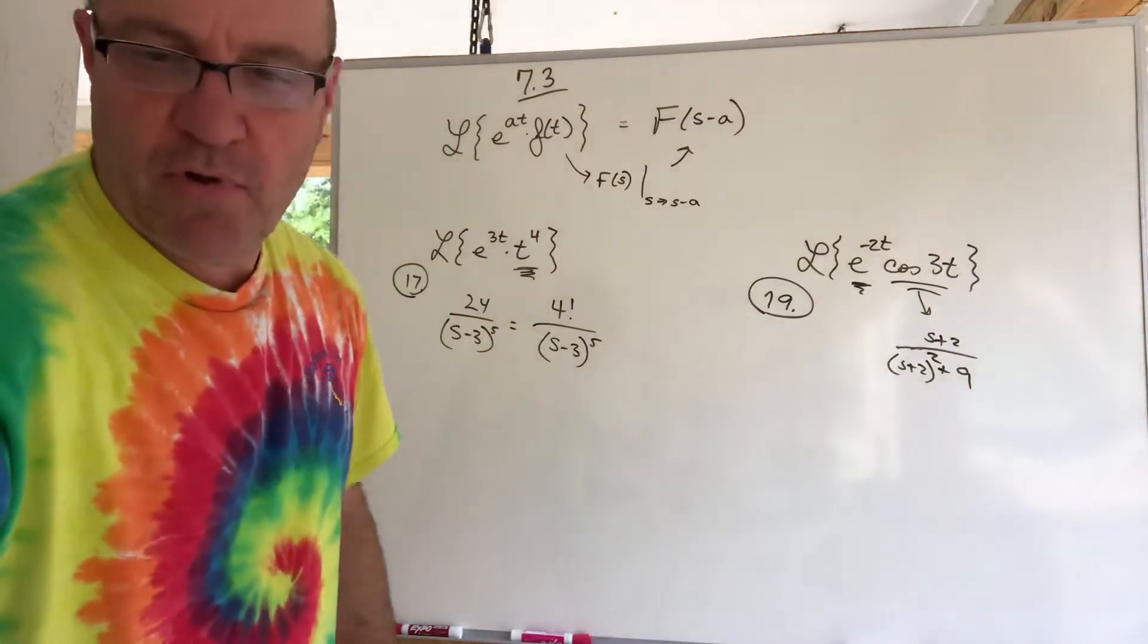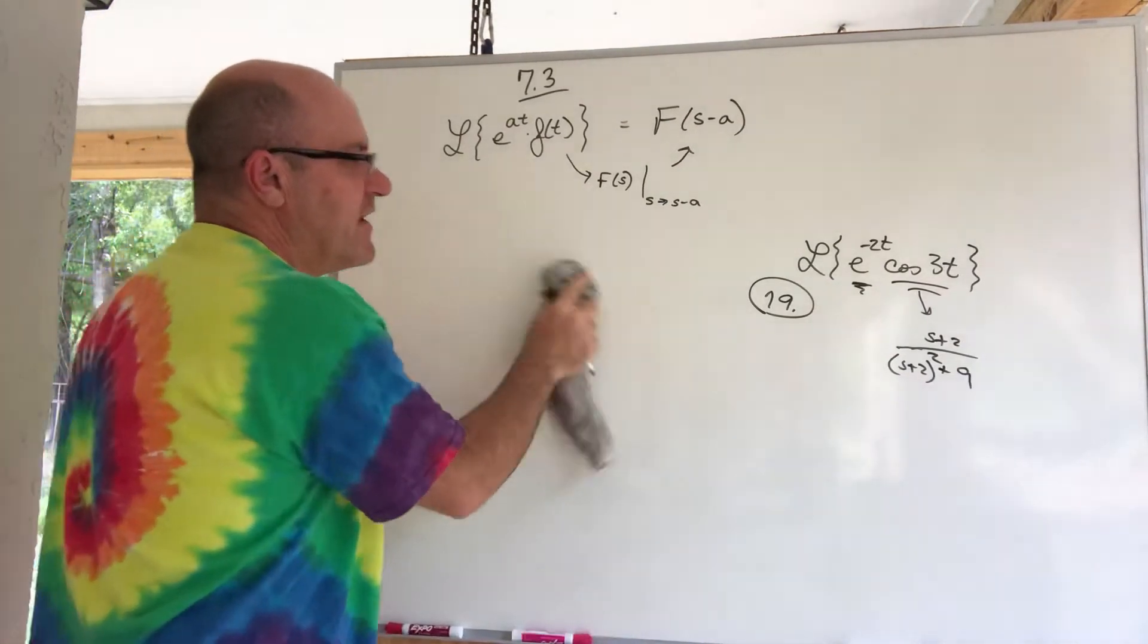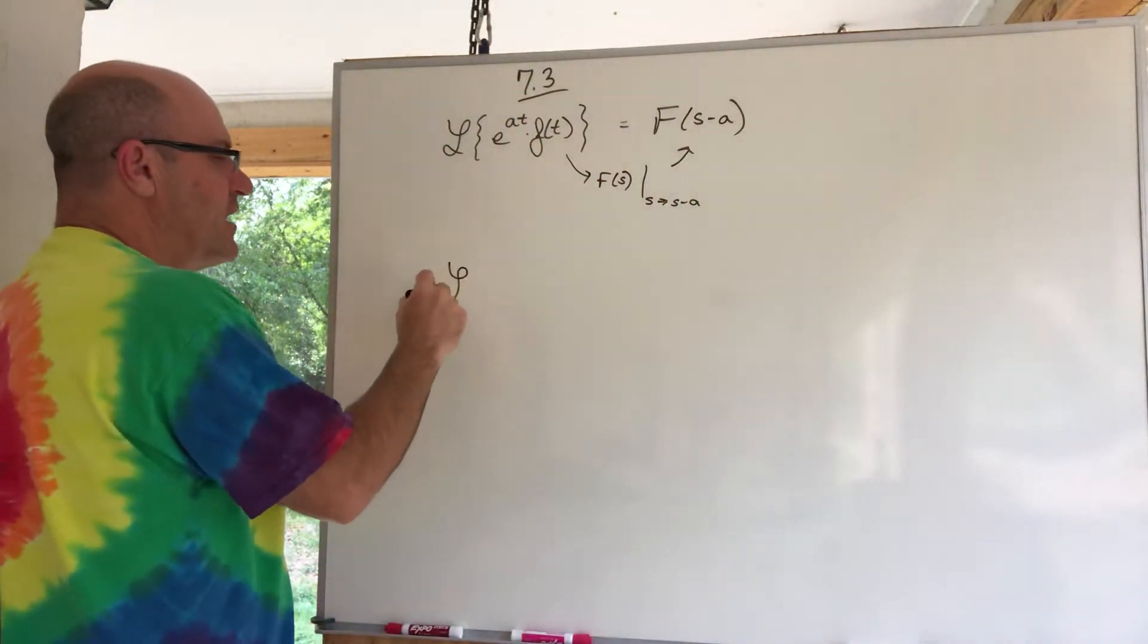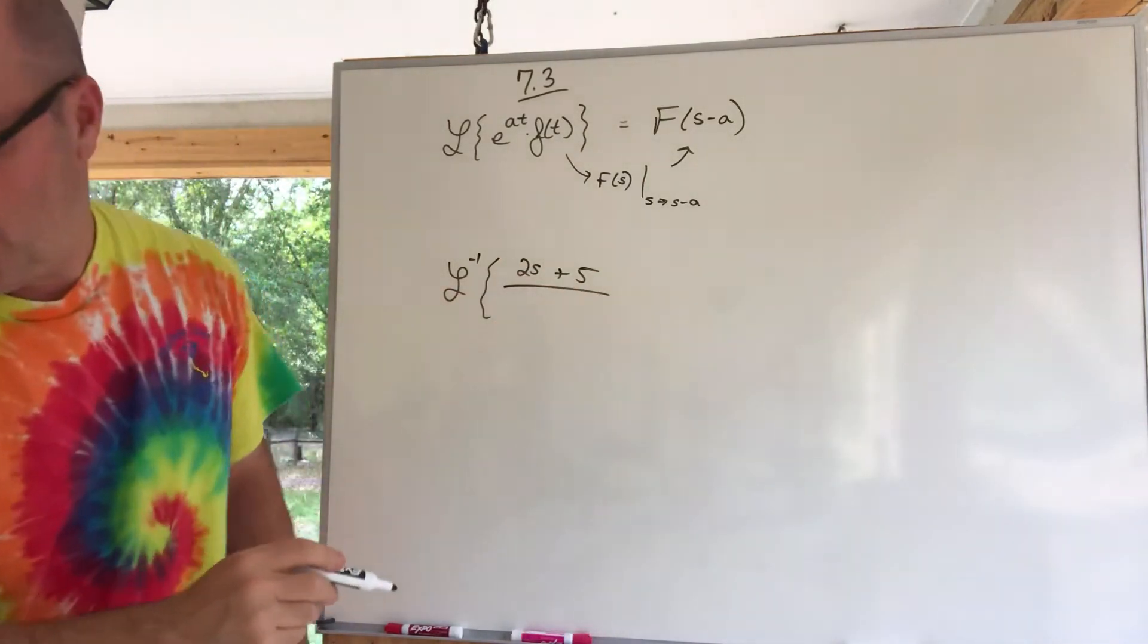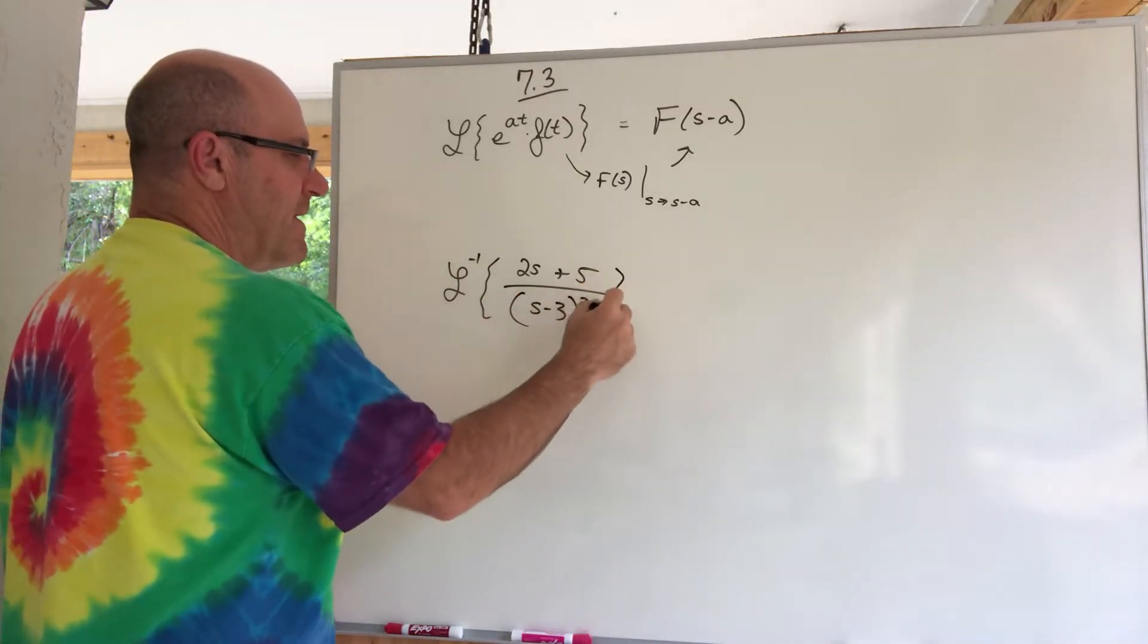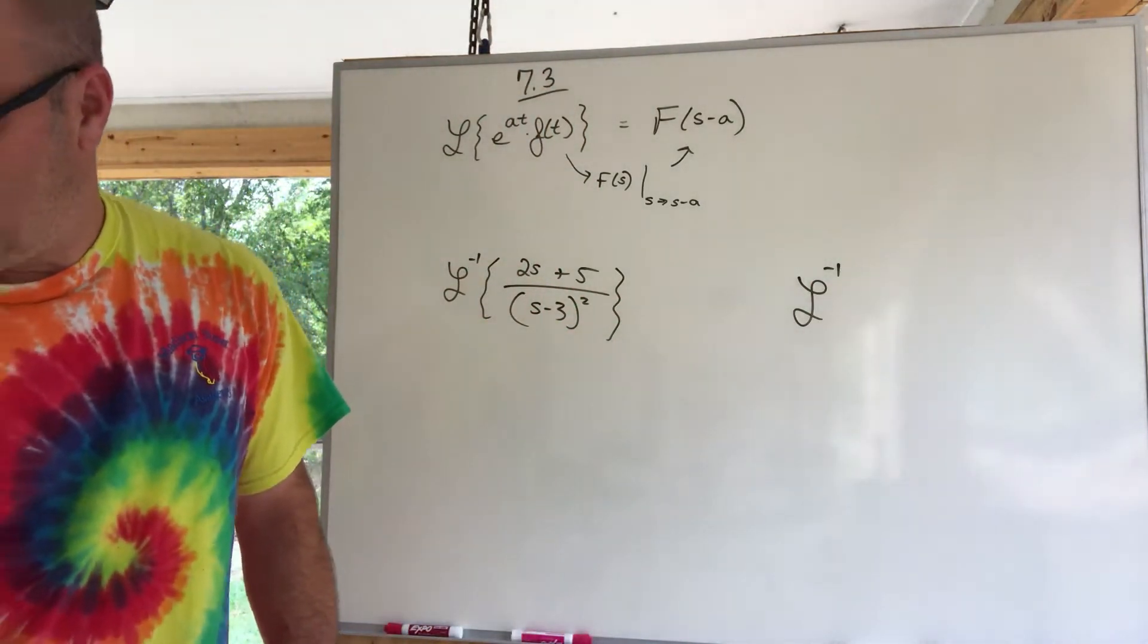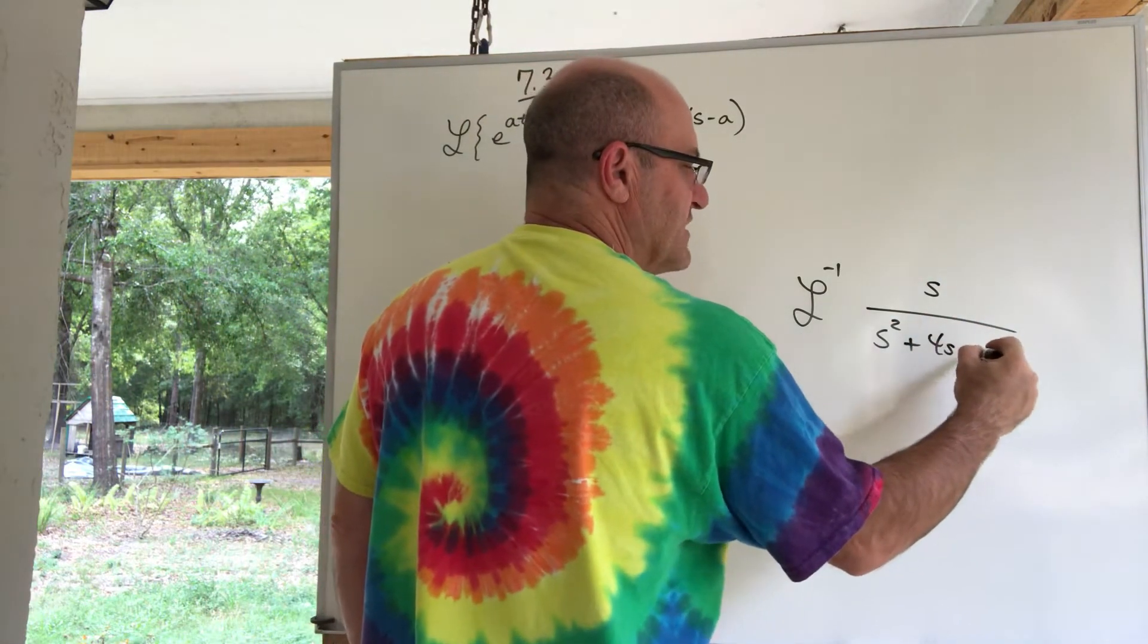Let's try a couple Laplace inverses. So, I'm going to get rid of these. I'm going to leave that up there. I've got a few things I want to do here. A couple of Laplace inverses. Let's try this one. Laplace inverse of 2s plus 5 over s minus 3 squared. That's kind of tricky. Here's another one. The Laplace inverse of s over s squared plus 4s plus 10.